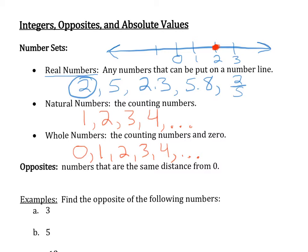Before we get to our next number set, which is our integers, we want to talk about what we call opposites. Opposites are numbers that are the same distance from 0. So I have my number line with 0, 1, 2, and 3. The number line extends in both directions, so to the left of 0 we can include numbers that are not positive but negative — negative 1, negative 2, and negative 3. For example, 2 is 2 units from 0, so the opposite of 2 would be 2 units from 0 in the opposite direction, which is negative 2.